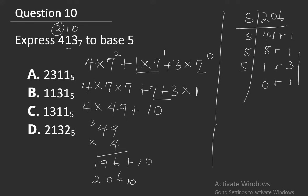Reading remainders from bottom to top: 1, 3, 1, 1. The answer is 1311 base 5. The right option is C.